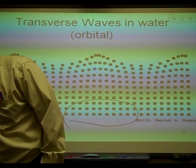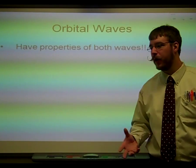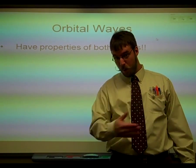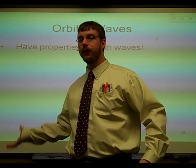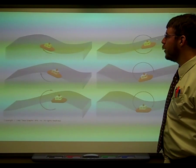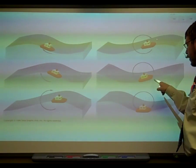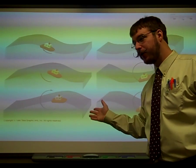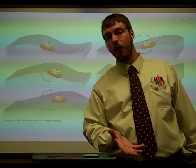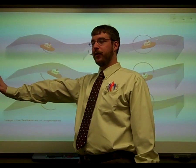In water we have these things called orbital waves, which are actually a combination of both. Water in the ocean, when being a wave, actually flows with a longitudinal wave but also transfers energy like a transverse wave, which is crazy. Here is a diagram showing you that. You can see that a boat is moving in a circle, just like you saw with the transverse waves. But the boat is also pushed along with the wave, so it is also a longitudinal wave because it's actually pushing energy in that direction as well, and it actually has a tendency to push the water molecules that direction too.